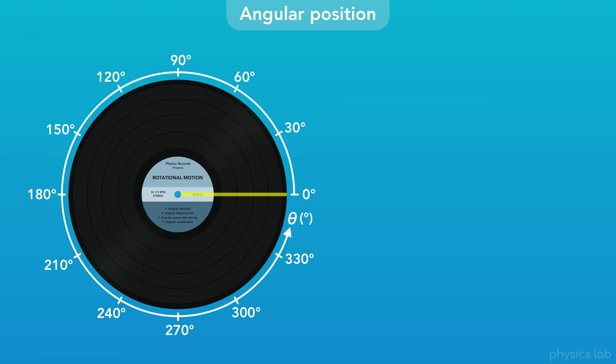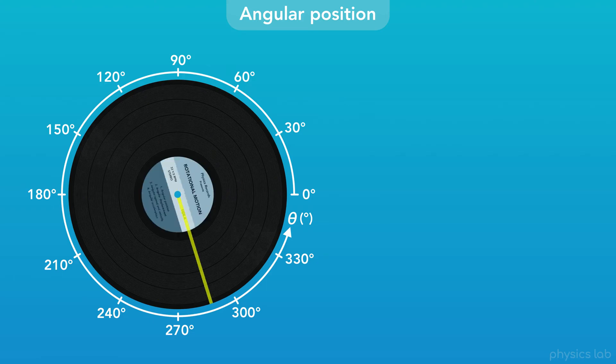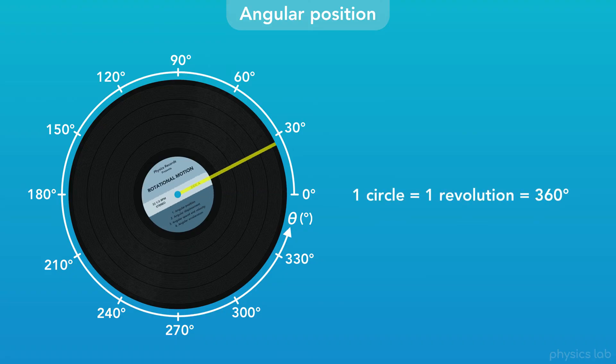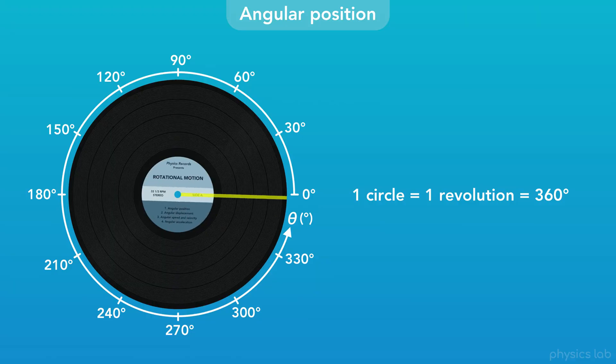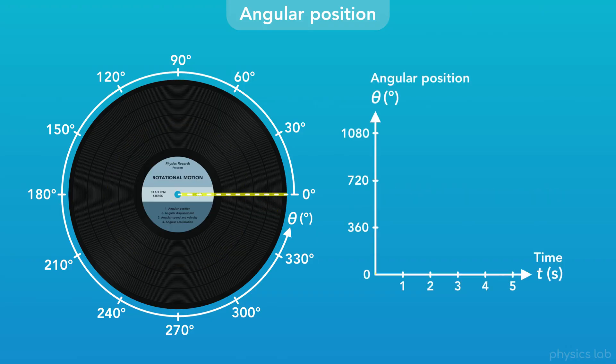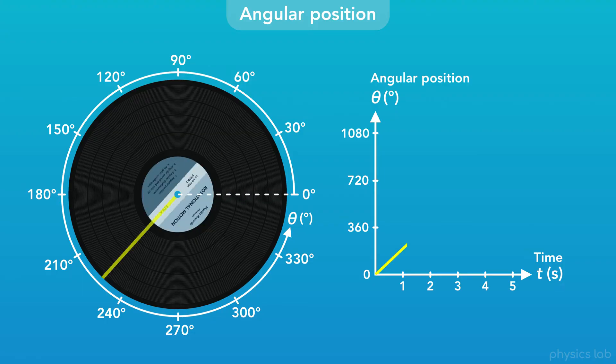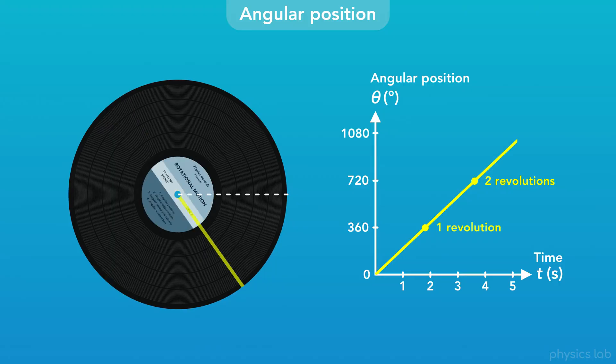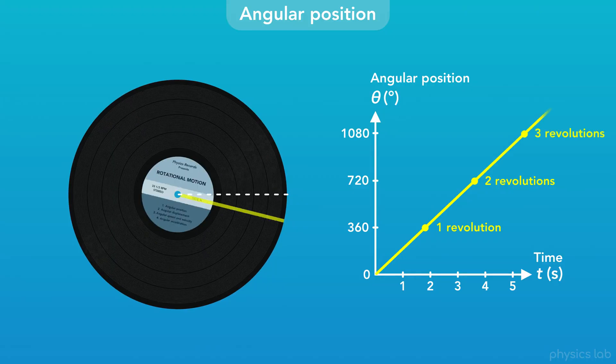What would be the angular position of the record if it rotates a full revolution? There's 360 degrees in a circle, so if we follow the record's motion from the start, then the final position would be 360 degrees. What happens if the record keeps rotating? Here's a graph of the angular position versus time. Just like with circular motion, the angular position doesn't reset back to zero. It keeps increasing as the record rotates.